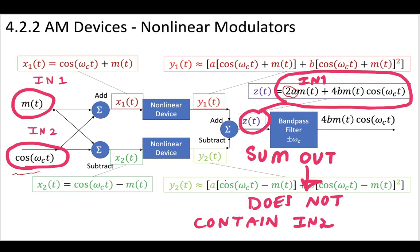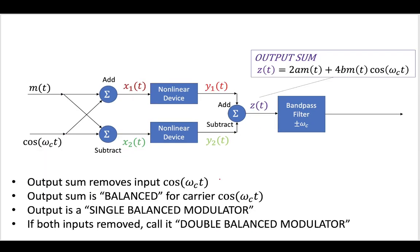So because of this, we can say that our output contains one of the inputs, but not the other. So we'll call this a balanced modulator. And we'll call it a balanced modulator because at this output sum, we have removed one of the inputs.